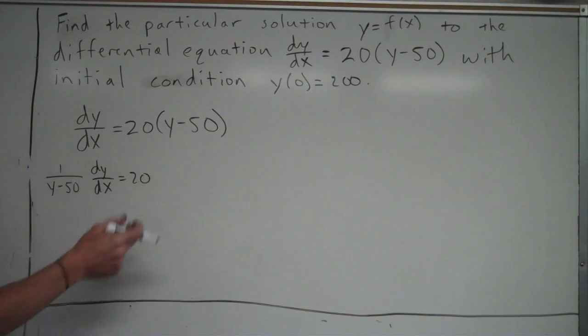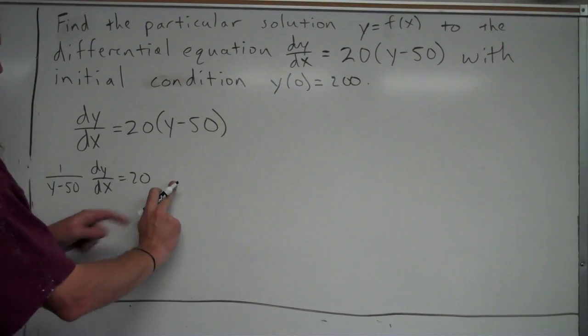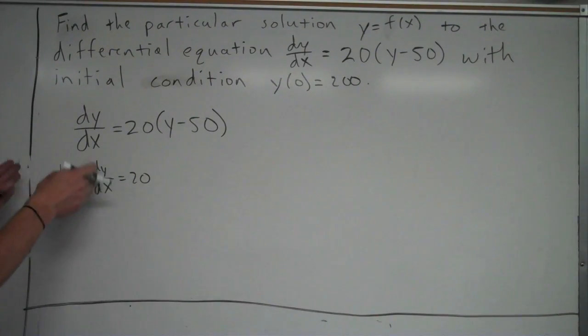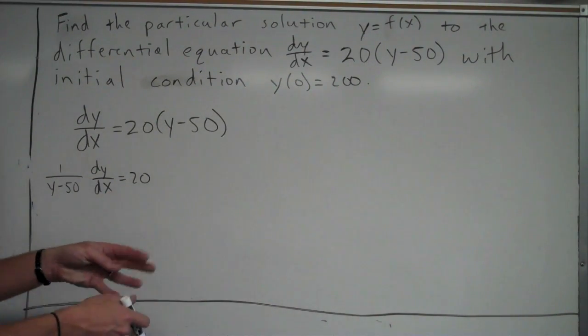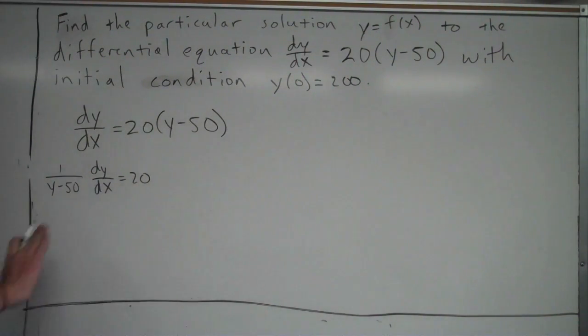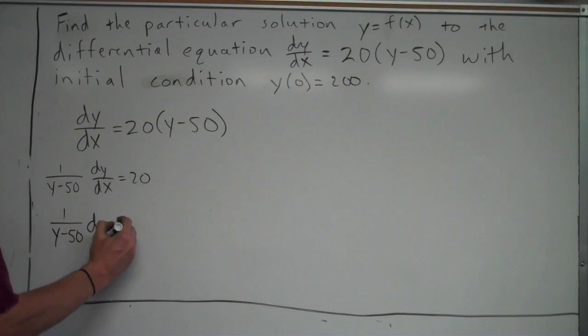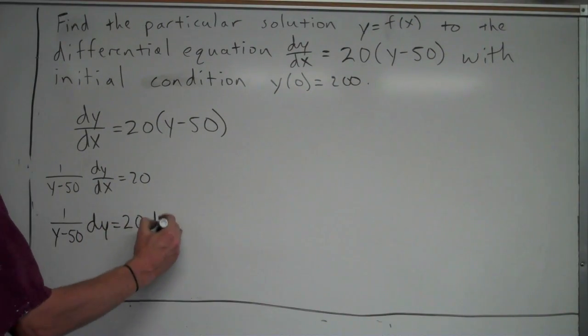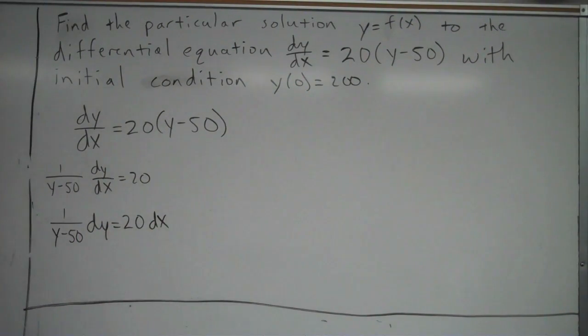I'll notice right here, y minus 50. I'm going to take that, and I'm going to divide both sides to bring it over to the left. So, I will have 1 over y minus 50 on the left-hand side. Then, dy over dx equals 20. When I multiply by dx, I'll be left with 1 over y minus 50 dy is equal to 20 dx.